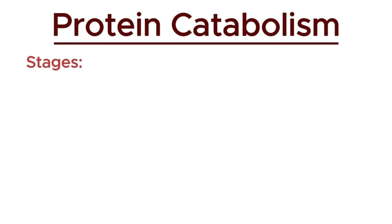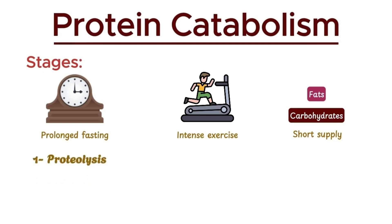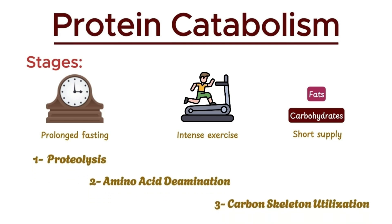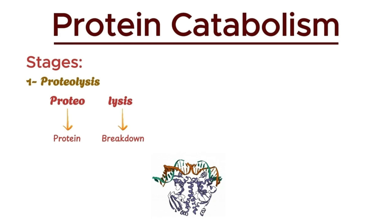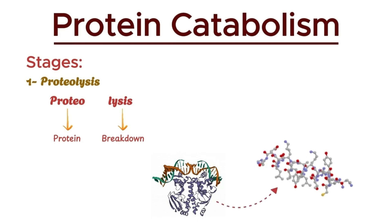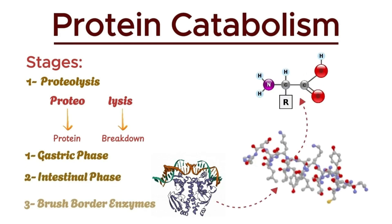Protein catabolism typically occurs during prolonged fasting, intense exercise, or when carbohydrates and fats are in short supply. This process consists of several stages. The first stage is proteolysis, where 'proteo' refers to proteins and 'lysis' refers to breakdown. So proteolysis is the breakdown of proteins into smaller polypeptides and amino acids. This process occurs in several steps.